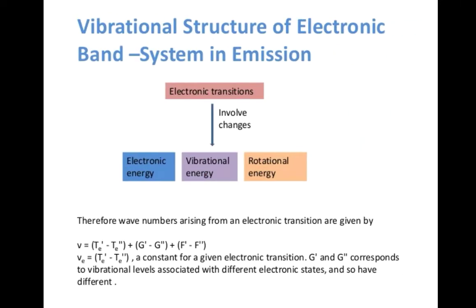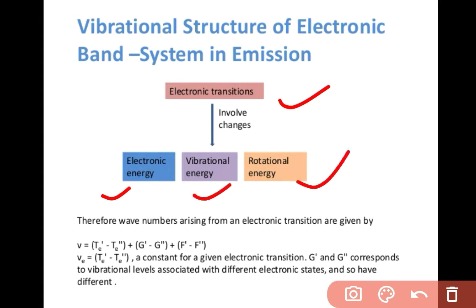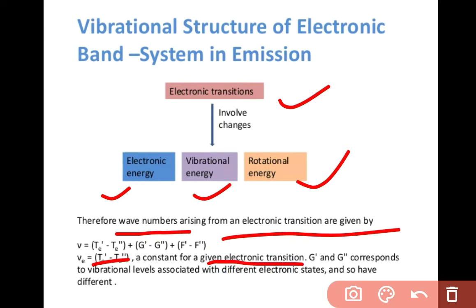The vibrational structure of an electronic band system involves changes in electronic energy, vibrational energy, and rotational energy. Therefore, the wave number arising from an electronic transition is given by: V = (T_e' − T_e'') + (G' − G'') + (F' − F''). Here V_e = T_e' − T_e'' is a constant for a given electronic transition. G' and G'' correspond to vibrational levels associated with different electronic states, and F' and F'' correspond to the rotational energy states.